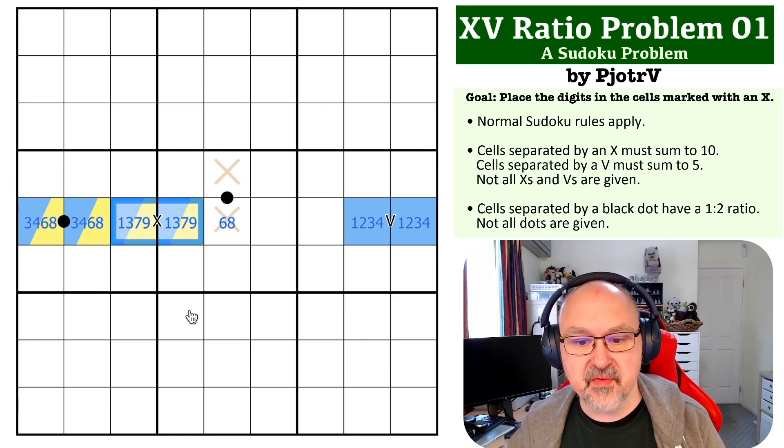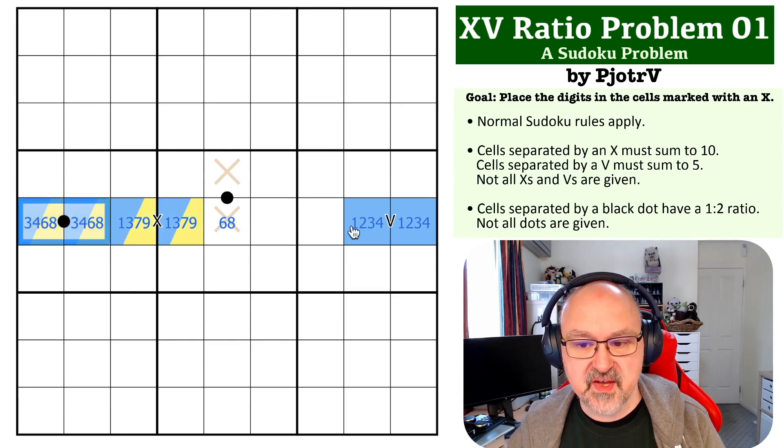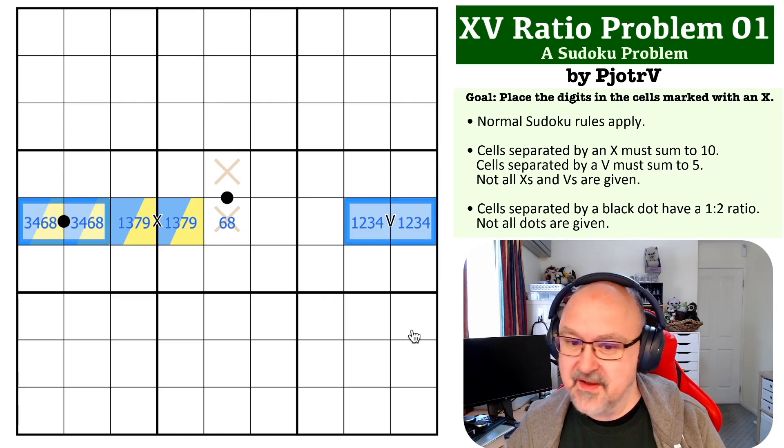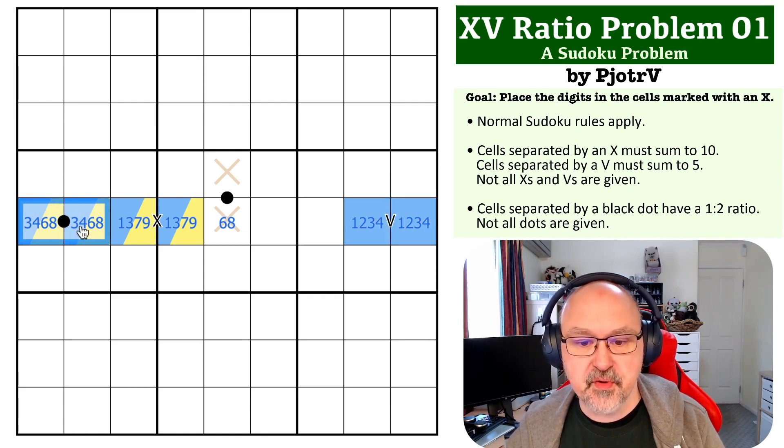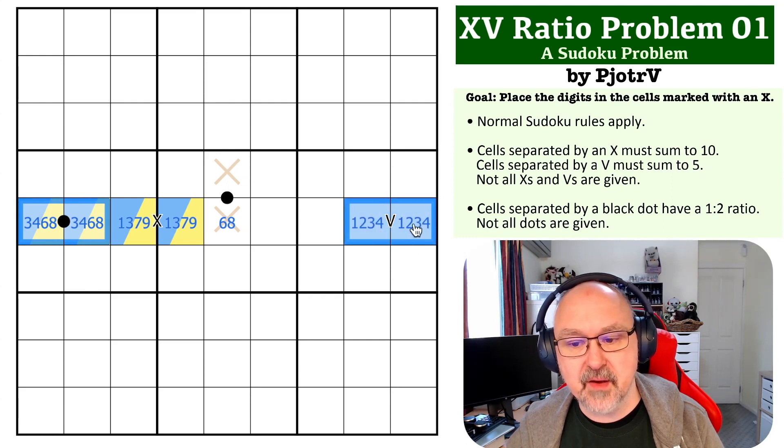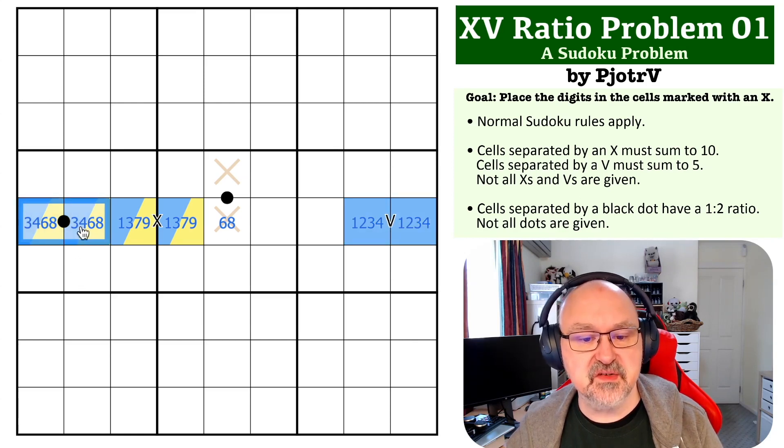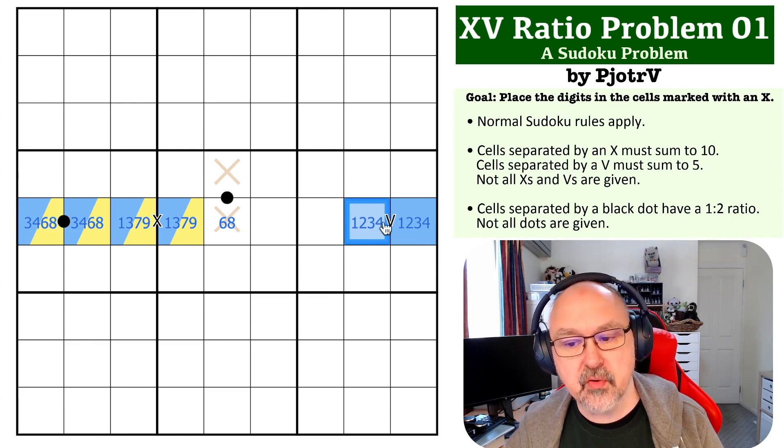But I also need to think about this from the perspective of these. I must put a three or a four on here, and I must put a three or a four on here, because this is either going to be two-three or one-four, and this is either going to be three-six or four-eight. So if I put a three on here, I must put a four on here.